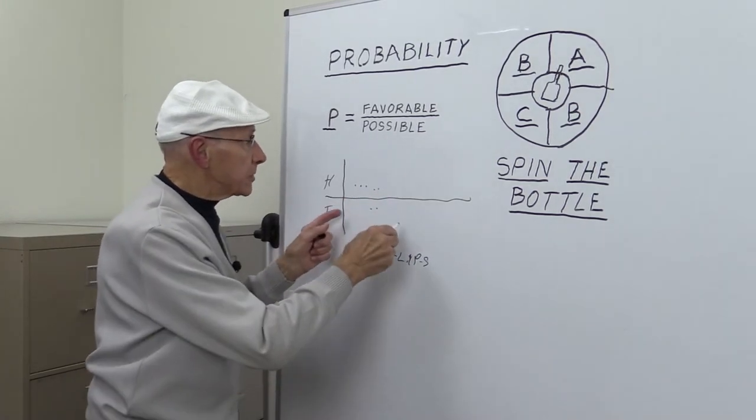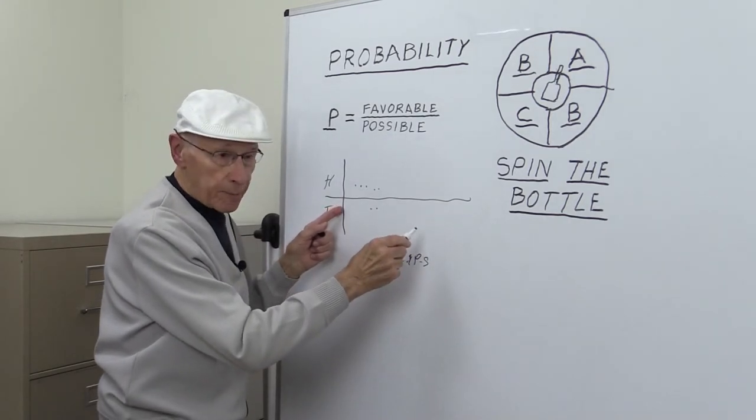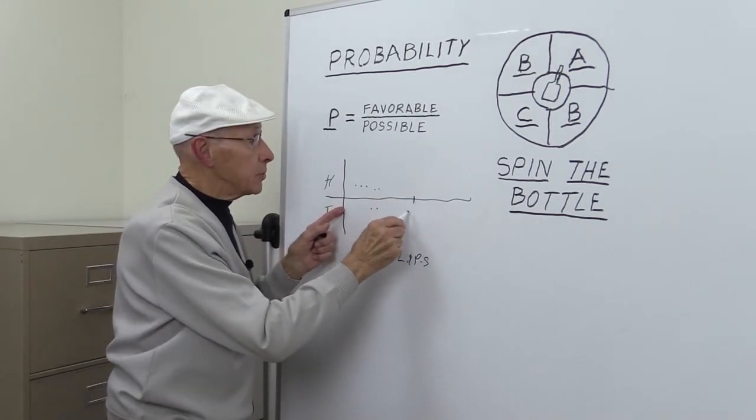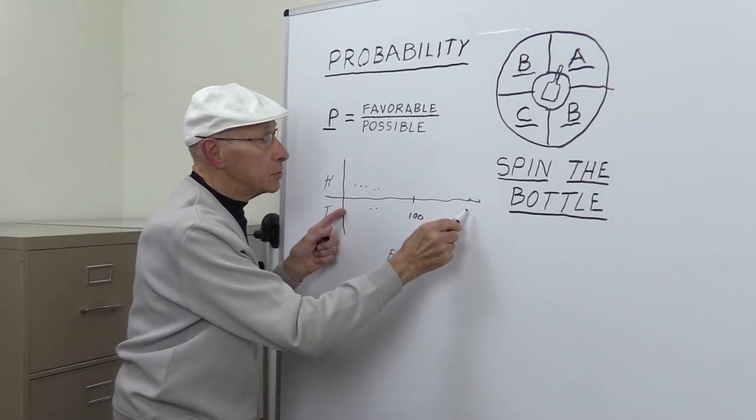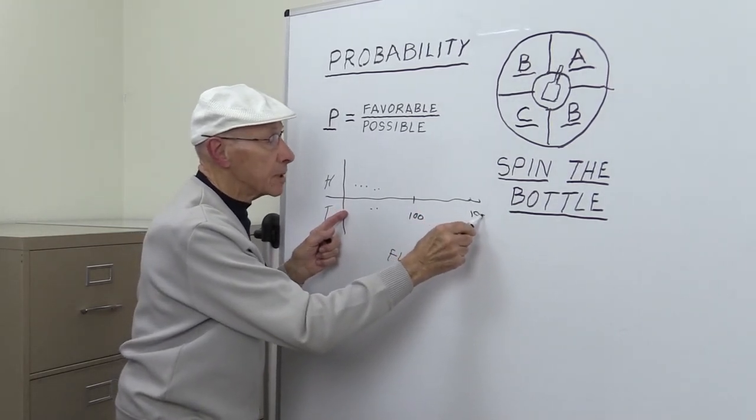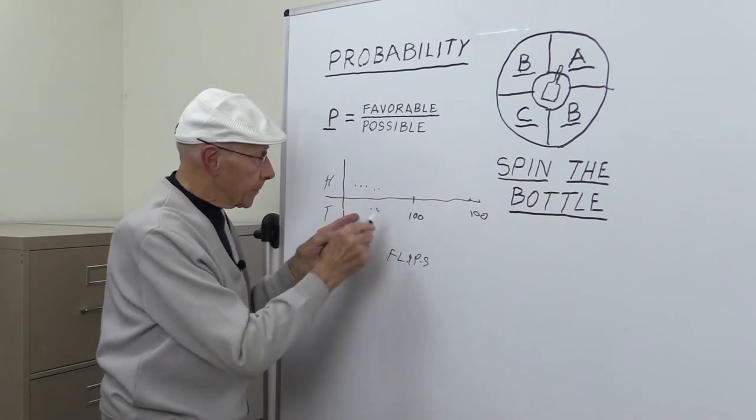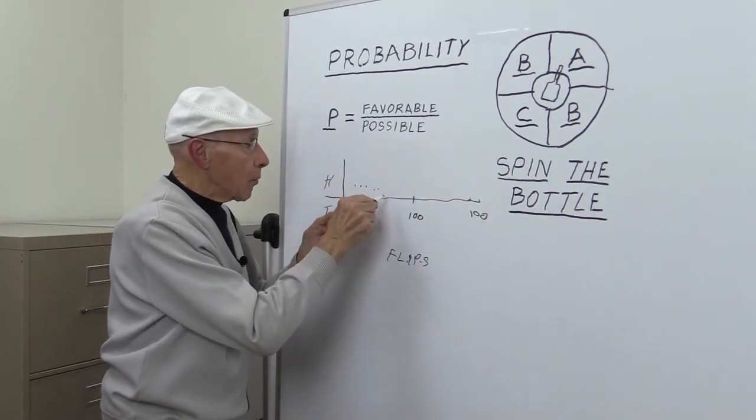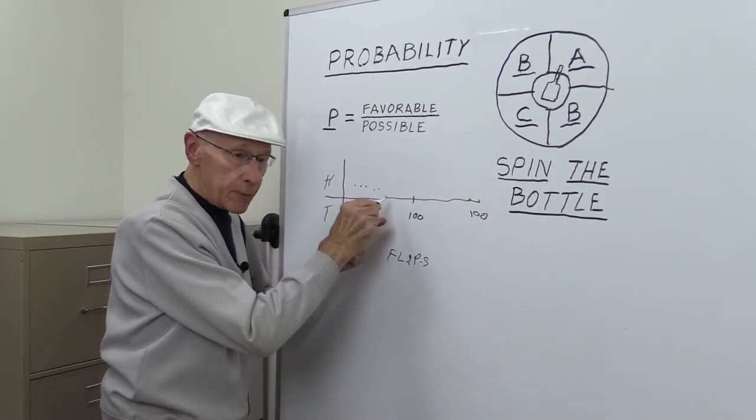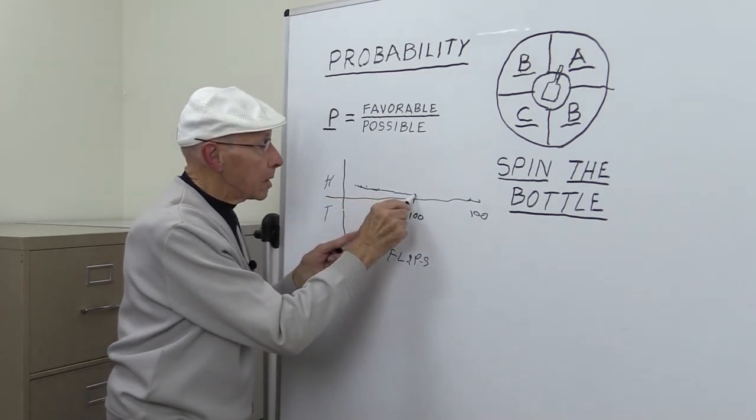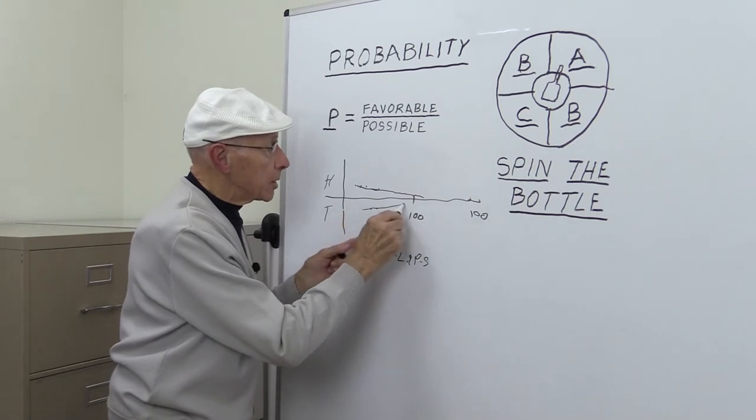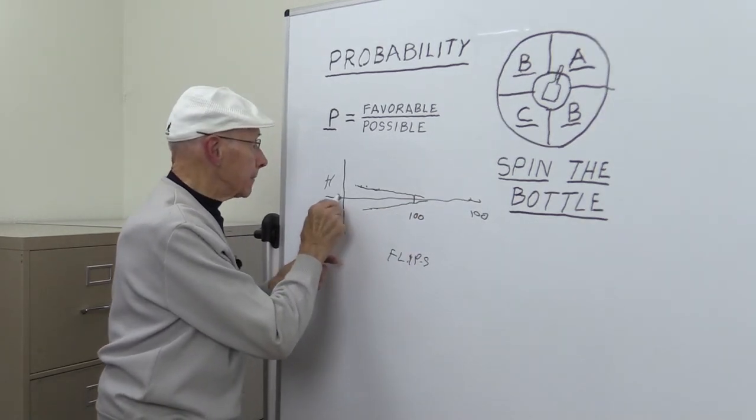If you graph this over a long period of time, let's suppose you do that 100 flips or out here, let's suppose you go out to 1,000 flips. What's going to happen is that over these hundreds of flips, if you graph this, it's going to go and approach the zero line.